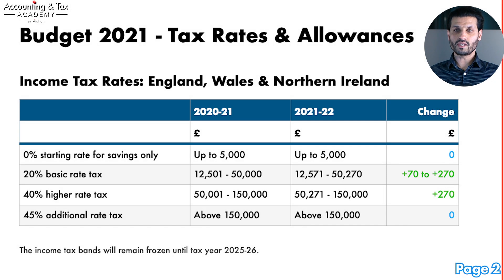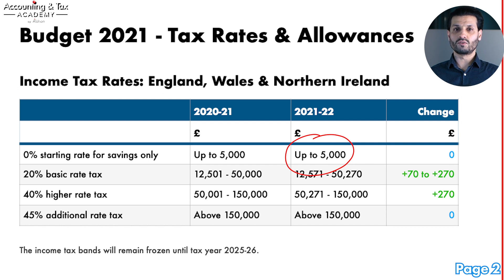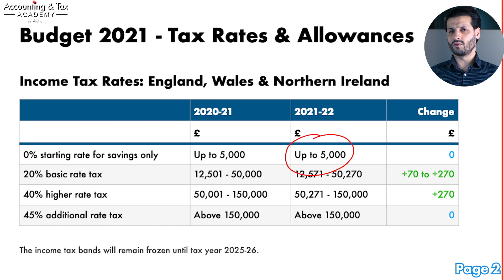There is still the 0% starting rate for savings. This simply means if you have earned up to £5,000 in gross interest off your savings, then this interest will not be taxed. It is standard practice for banks and building societies to pay you gross interest on your savings. But beware, it is only really useful if you have no or low non-savings earnings, such as a salary.